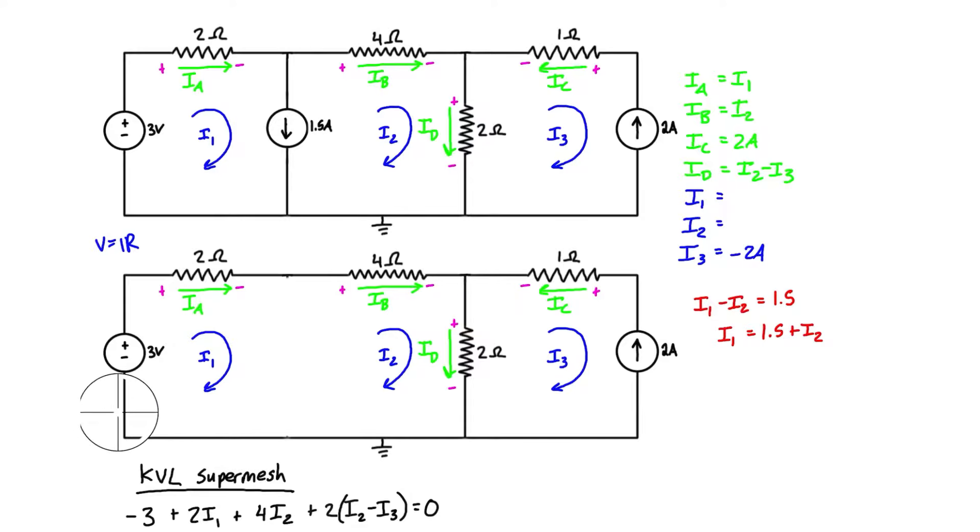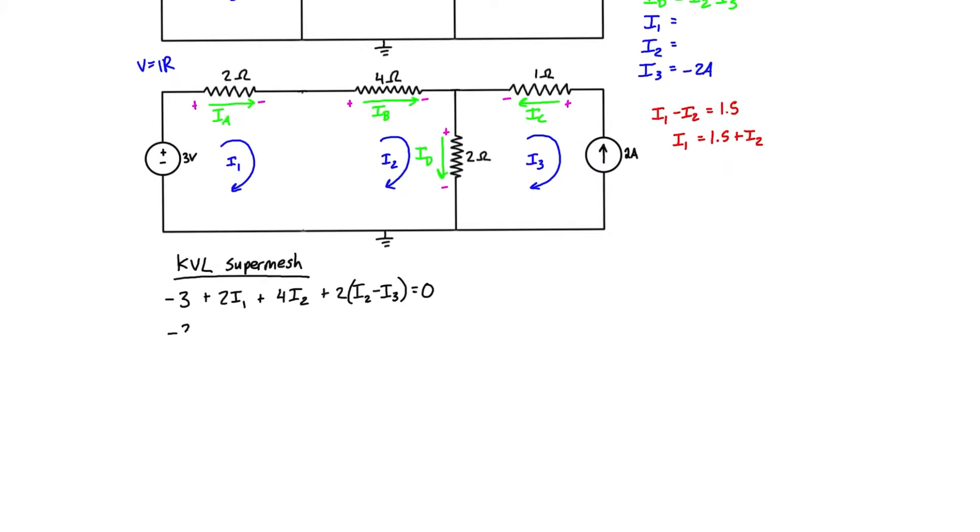That's all equal to zero because once we come out the bottom, we're back into this same node which is electrically common to the point where we started. Let's give ourselves a little bit more space to work here. Basically, we can just simplify this problem quite a lot—it's just a lot of steps—and we'll see that 2i1 plus 6i2 is equal to negative 1.